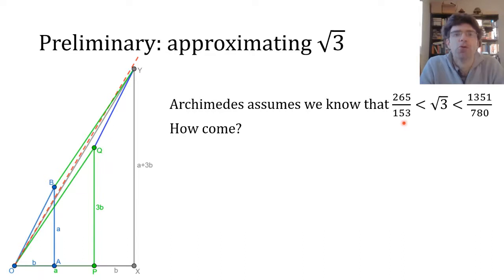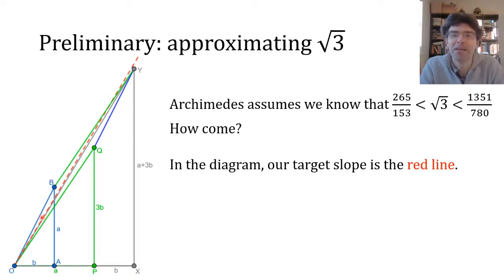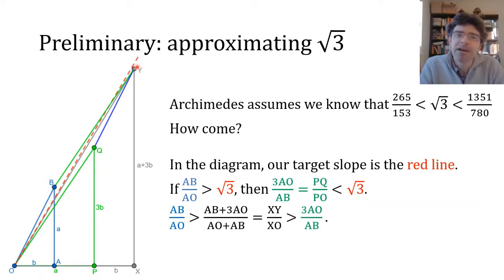Suppose we find a fraction, or in Greek terms a ratio of lengths AB to AO, which is just above root 3. Then we can easily find another ratio which is just below root 3, namely 3 times AO over AB. The product is 3, so if one's just above the square root, one is going to be just below it, and I've drawn that in green as PQ to OQ. And then we can construct the ratio of AB plus 3AO divided by AB plus AO. By creating the parallelogram ABYQ here, we've added the vectors OB and OQ together, and the diagonal of the parallelogram clearly lies in between the sides OB and OQ, so its slope is somewhere between those two ratios.